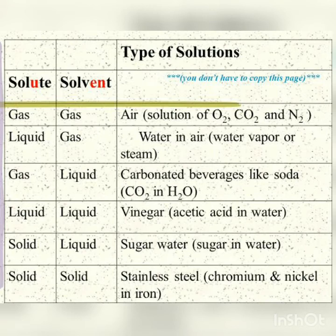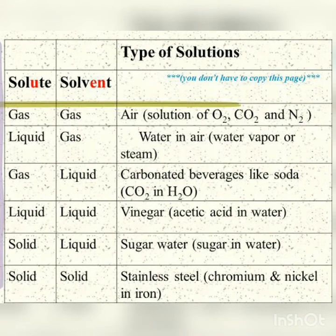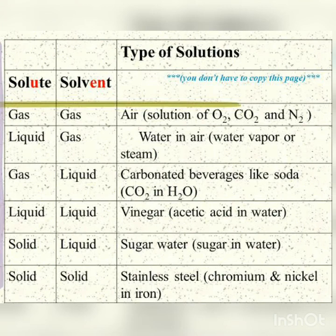Now let us look at the types of solution based on different combinations of solute and solvent. When both solute and solvent are gases, the example is air — nitrogen is the solvent and oxygen and carbon dioxide act as solutes. Liquid in gas: the example is water molecules present in air. Gas in liquid: aerated drinks like soda and cold drinks, in which carbon dioxide is present in water. Liquid in liquid: lemon juice in water is the best example. Solid in liquid: sugar solution and salt solution are very common examples, where sugar and salt are solute and water is the solvent.